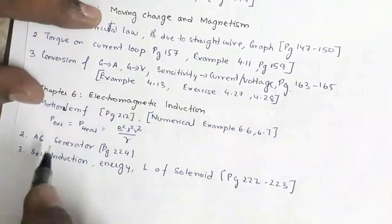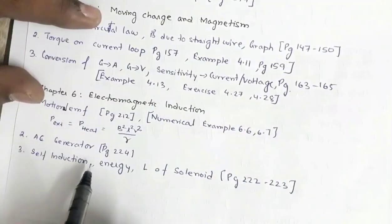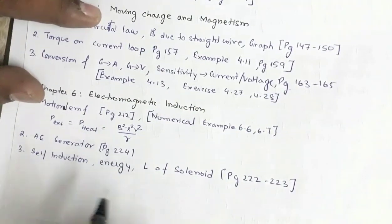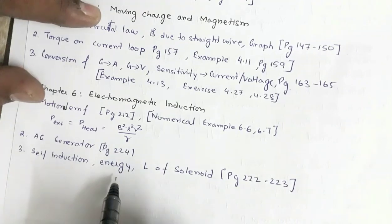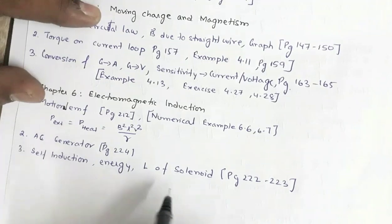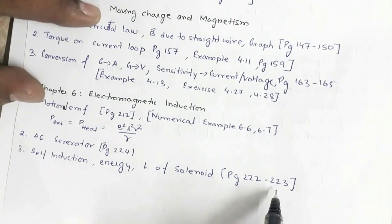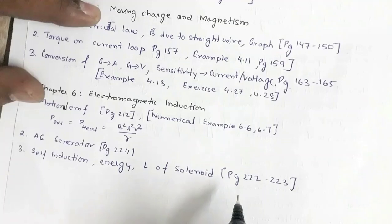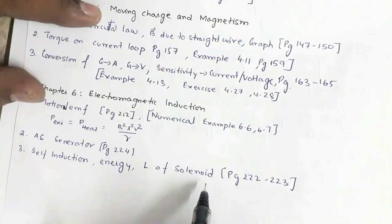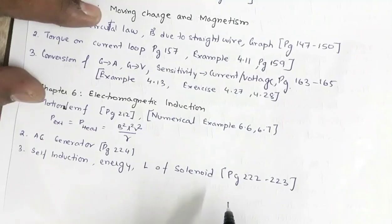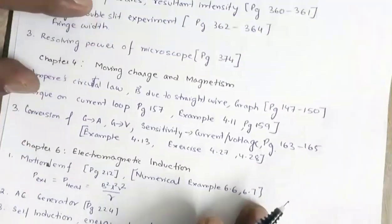Then the AC generator — a very important topic on page 224. Also self-induction, energy of self-induction, and the self-inductance of a solenoid — the complete derivation given on page numbers 222 and 223. Numericals based on self-inductance may also be asked.